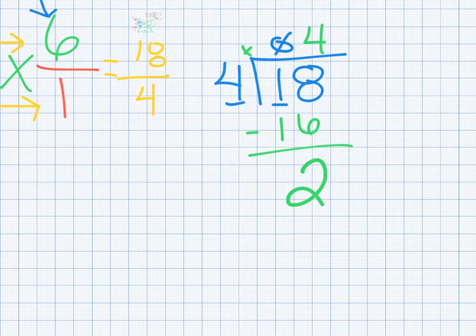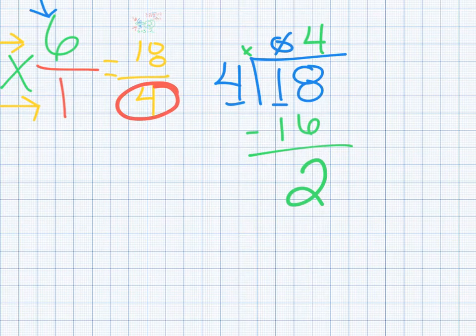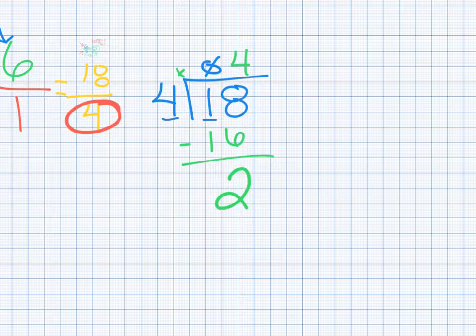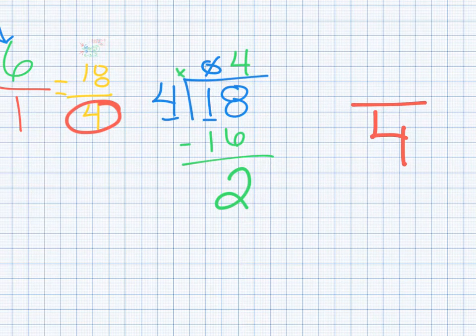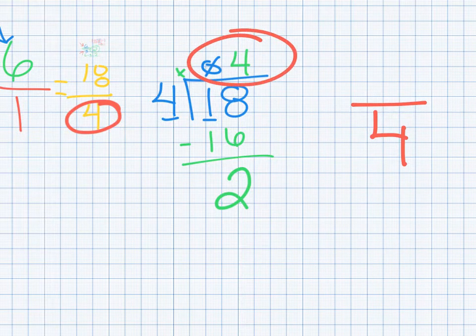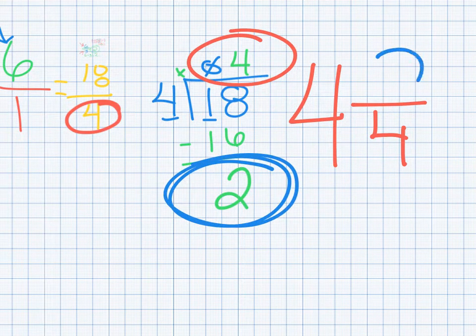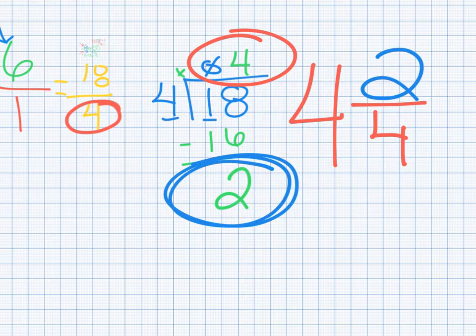So now, just like some of the prior lessons we did with converting an improper fraction to a mixed number, we have everything we need here. Notice our denominator was four here. So our answer, when we convert this problem into a fraction, our denominator is going to stay the same. It's still going to be four. Our whole number is whatever we have up top. Our quotient is our whole number. So that is four. And then our remainder, that is our numerator, four and two-fourths.